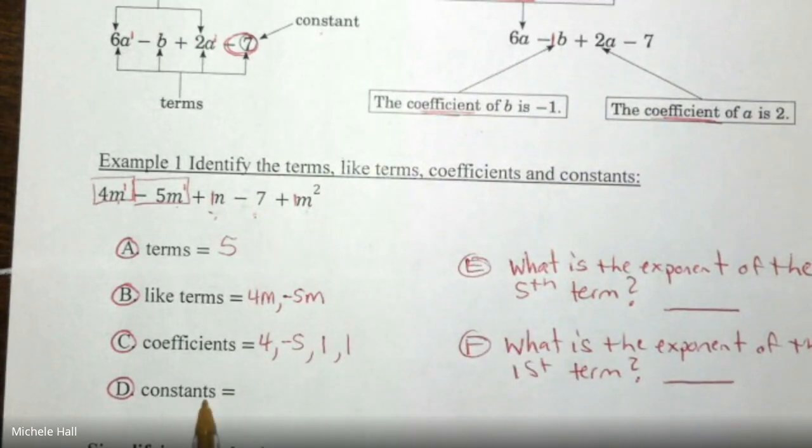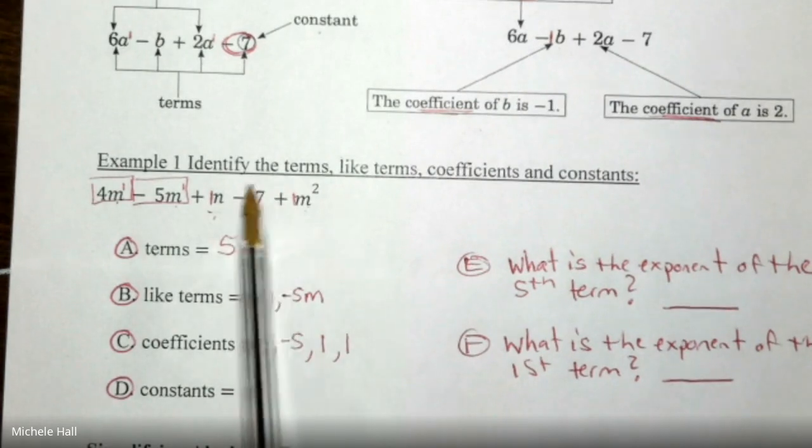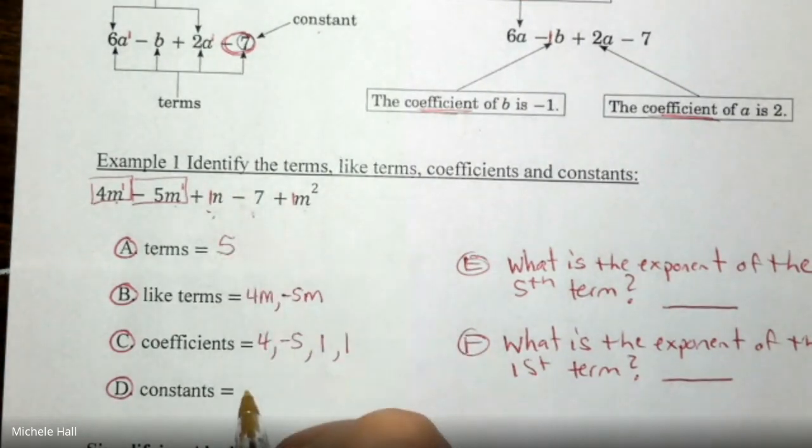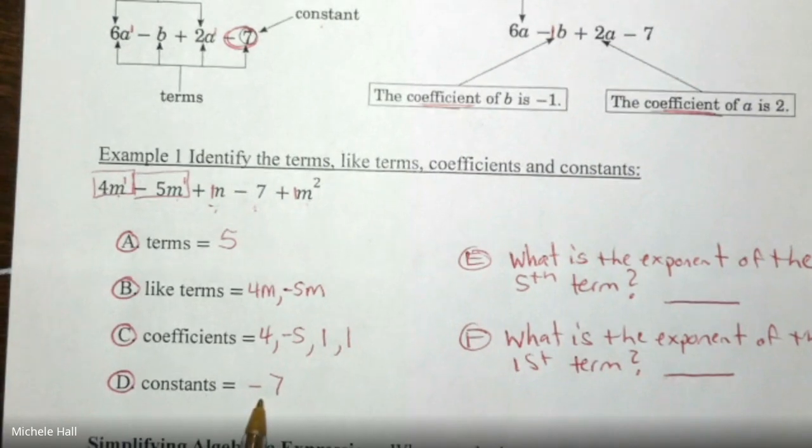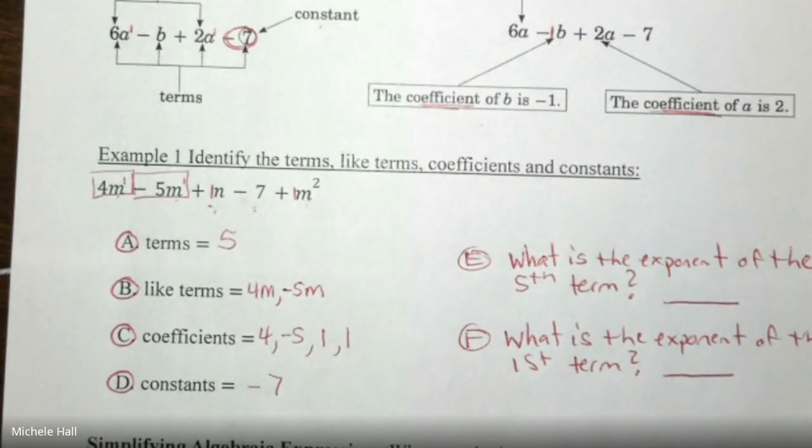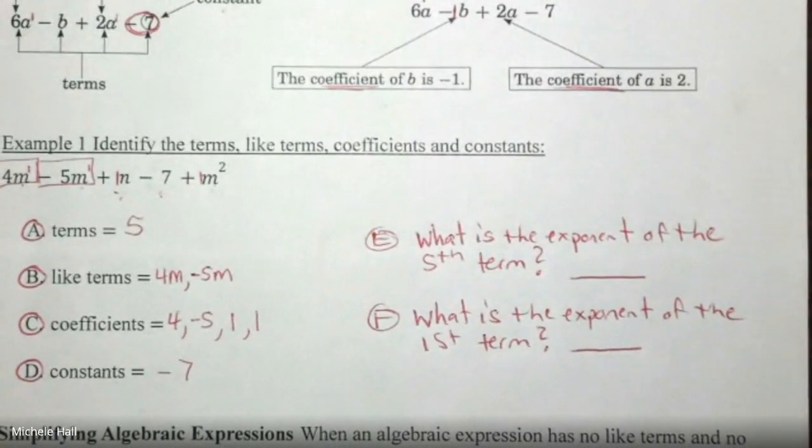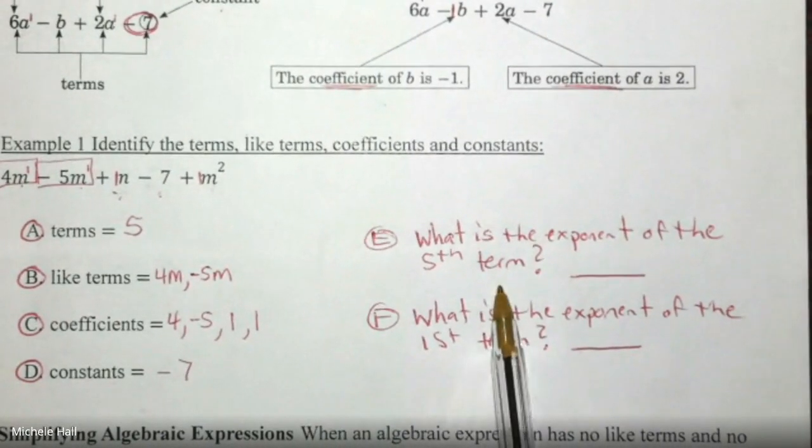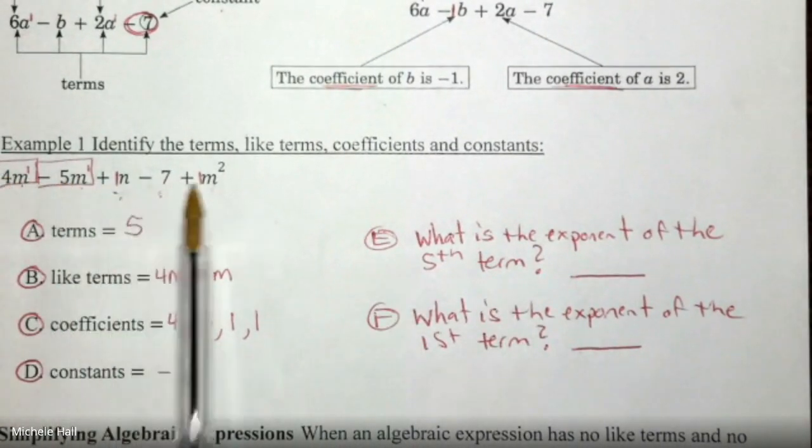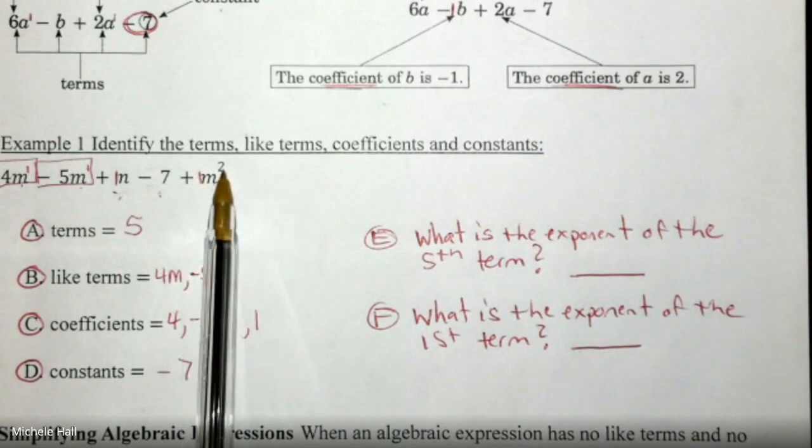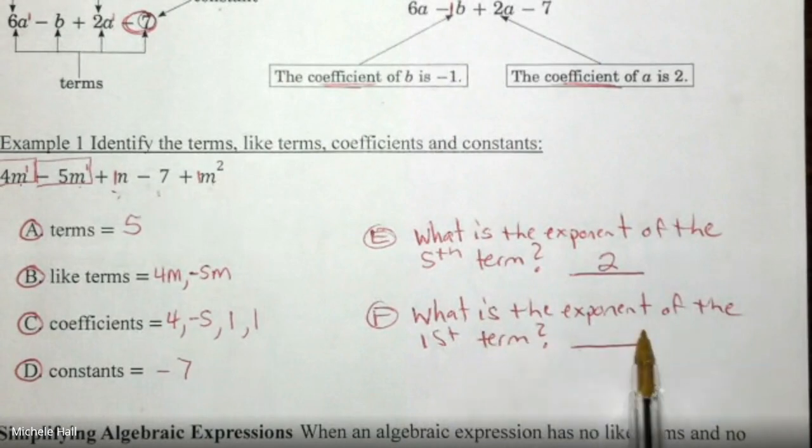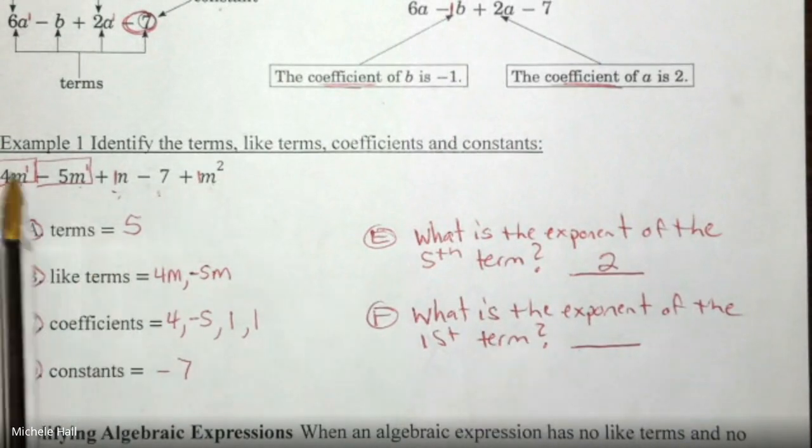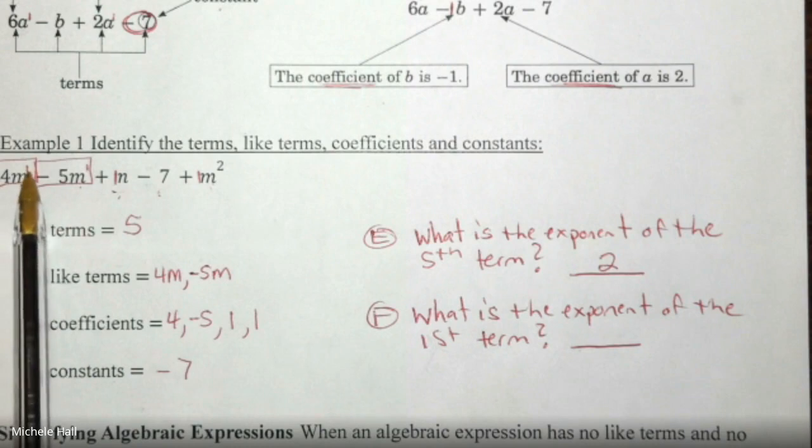Do we have any constants? And that would be negative 7. Keep your signs in front of your terms at all times. We've talked about this. What is the exponent of the fifth term? 1, 2, 3, 4, 5. The exponent would be 2. What is the exponent of the first term? The exponent of m would be a 1.